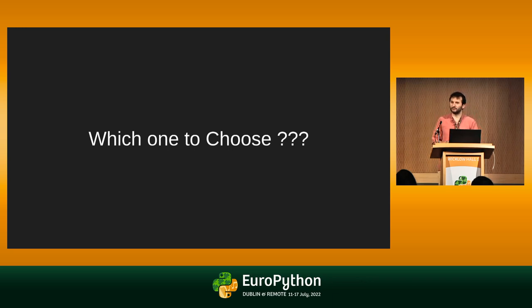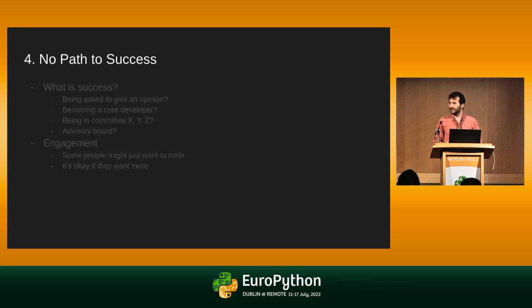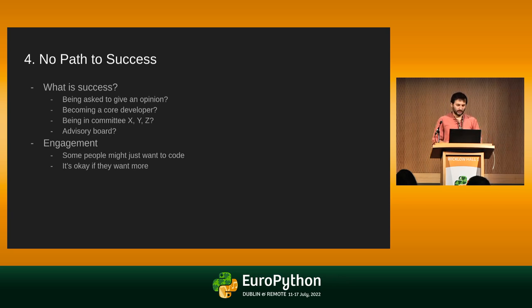Be very explicit about your governance so that when people come to your project, they know what they're dealing with. The next common issue is no path to success. When users or contributors come to your project, they have no idea what success looks like — should their opinion be sought on certain topics? Do you have committees, an advisory board, a core developer committee, or a triage member team? How do people advance? Is that clear? It matters because it sets the engagement level people will have. Some people are happy just to code, but many want to know how they can progress in your team, and you need to be clear about how they can do that.